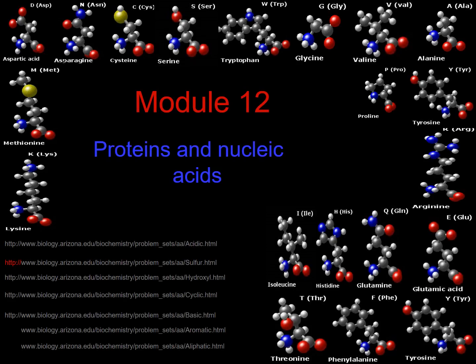Hello everybody, this is Mr. Coker and welcome to the 12th and final module of the semester. This will be the last module of your Chem 2, Chem 106 class. This module is about proteins and nucleic acids, so it's biochemistry. I'm not as good at biochemistry as I am at inorganic chemistry, but I will do my best to say things accurately.